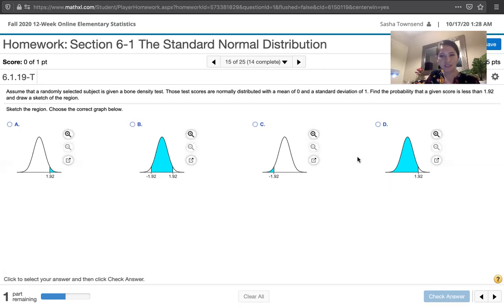That's what we see in option D and in option A, but the problem asks for the probability that a given score is less than 1.92. So if it's less than 1.92, we shade to the left of 1.92, not to the right. Therefore, D must be our graph.